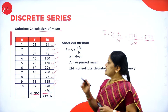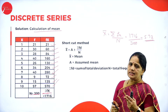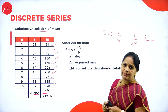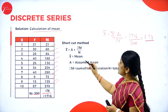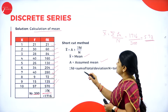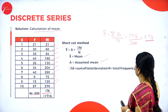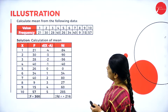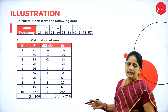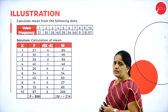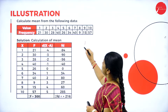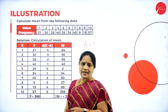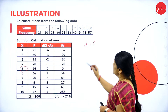The second method is: a ± sigma fd by n, where x-bar is the mean, a is the assumed mean, sigma fd is the sum of total deviations, and n is the total frequency. We do the same problem using the shortcut assumed mean method. We assume a = 5, as 5 tends to be the middle-most value.